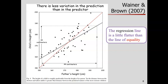If we expected a child to be exactly as tall as the parent, the red line would be our prediction line. But the regression line is different from the line of equality. Visually it's a little flatter — the slope is a little bit smaller. Does everyone see that visually? The regression line is not the line of equality here.